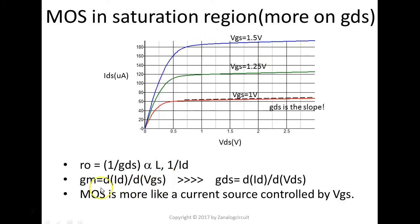So, we say, in this region, MOS is more like a current source, controlled mainly by VGS.